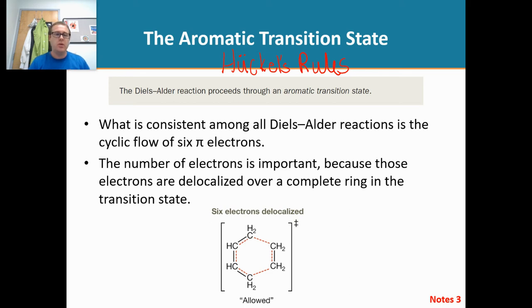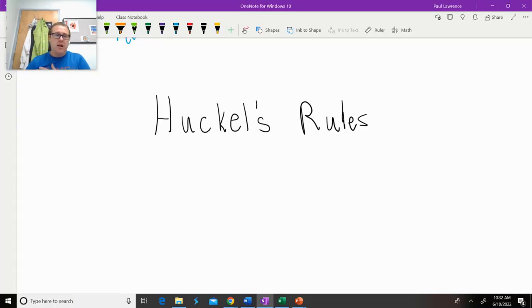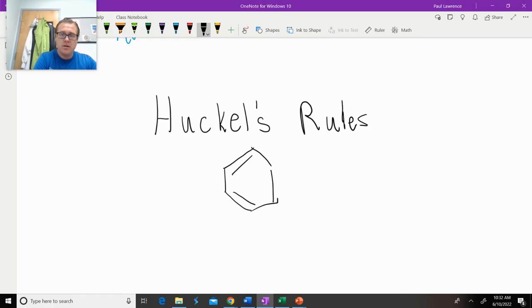Class, in order to understand what an aromatic transition state looks like, we need to understand what an aromatic compound looks like. So we are going to use Huckel's rules to figure out what an aromatic compound looks like. There's our benzene molecule.